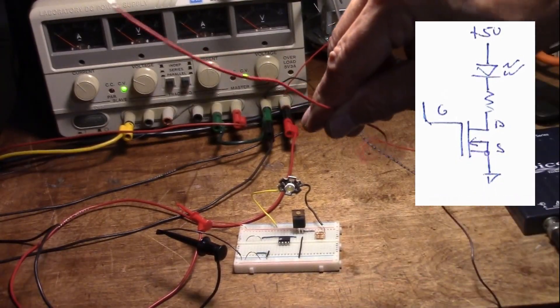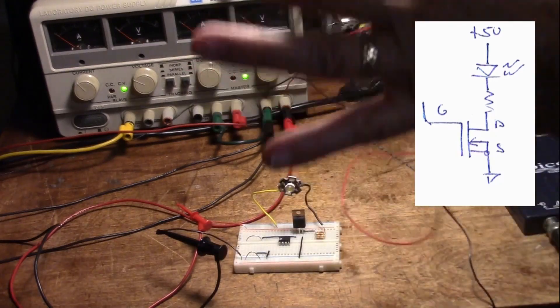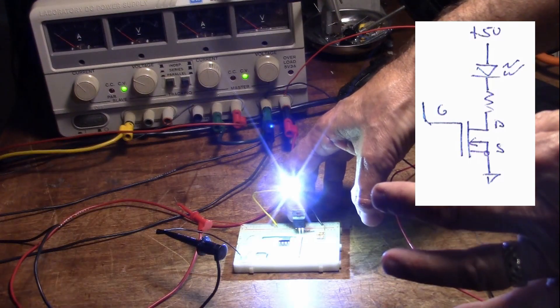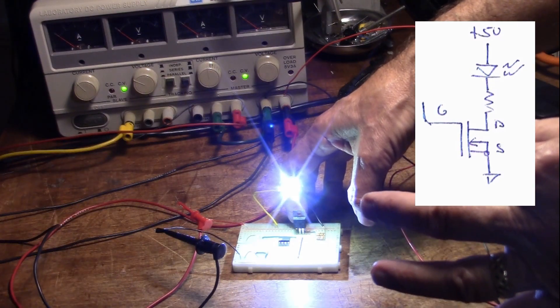And if I walk over to this and touch my 5-volt supply and touch the gate, it lights up. How did that happen?